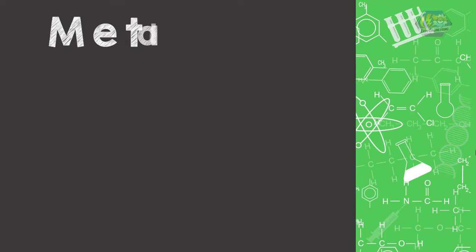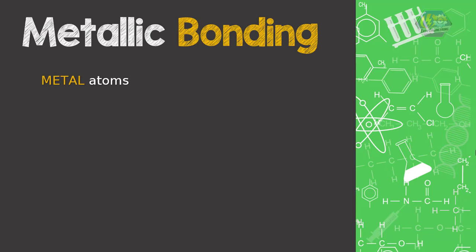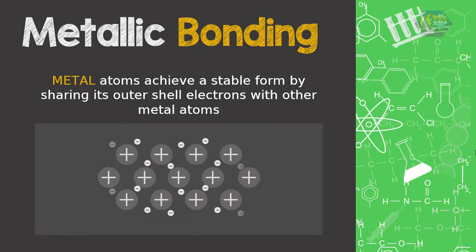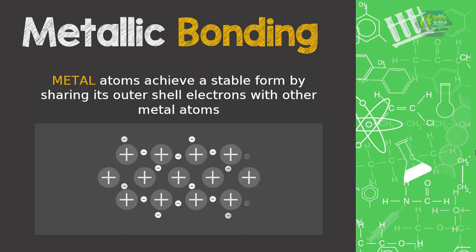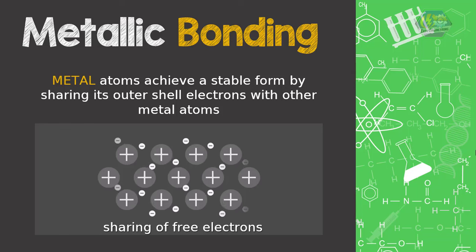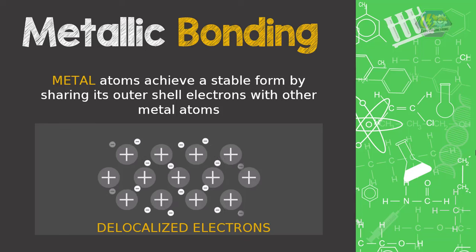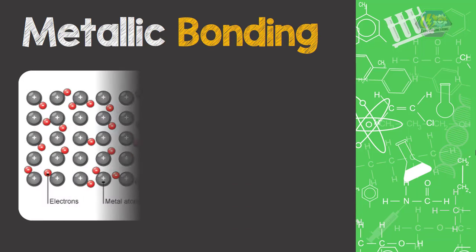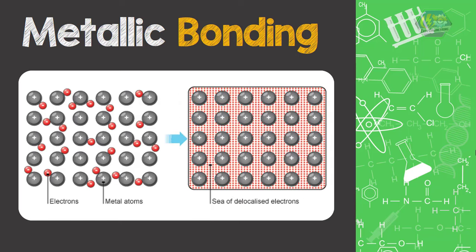The third type of bonding is metallic bonding. It occurs between metal atoms. Metal atoms achieve a stable form by sharing their outer shell electrons with other metal atoms. The valence electrons of each metal atom are not tightly bound to the nucleus, so each metal contributes all the electrons in its valence shell to other metal atoms in the structure. This may be described as the sharing of free electrons among the structure, sometimes called delocalized electrons, meaning they are not associated with any single atom. The electrons then form a sort of sea of electrons within the structure.